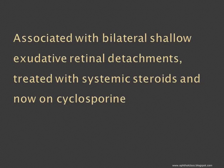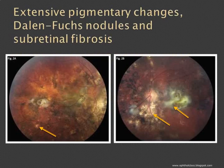The history included bilateral shallow exudative retinal detachment, treated with systemic steroids, and now the patient was on cyclosporine. After 10 years of recurrent attacks, the fundus showed extensive pigmentary changes, and in the mid-periphery and periphery, small healed punched-out lesions — the Dalen-Fuchs nodules — which were now healed.